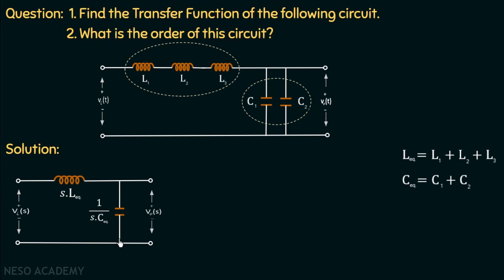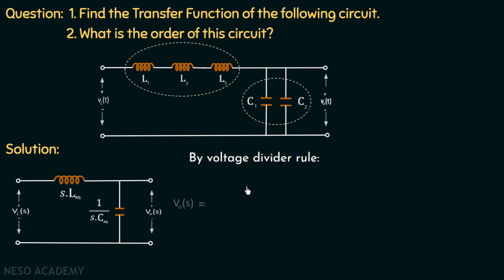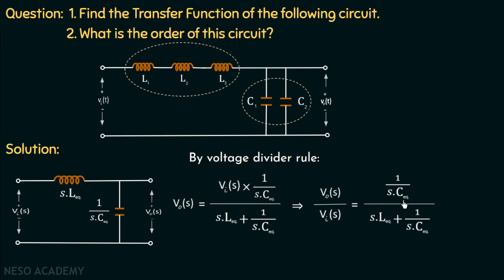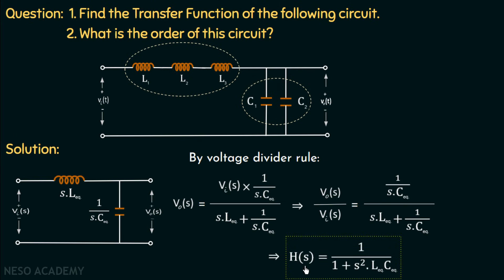Since the elements are connected in series, the voltage gets divided, so we can use the voltage divider rule to find the output voltage across the capacitor: Vout(s) = Vi(s) · [1/(s·C_eq)] / [s·L_eq + 1/(s·C_eq)]. Transposing Vi(s) gives Vout(s)/Vi(s) = [1/(s·C_eq)] / [s·L_eq + 1/(s·C_eq)]. Multiplying numerator and denominator by s·C_eq gives the transfer function H(s) = 1 / (1 + s²·L_eq·C_eq).